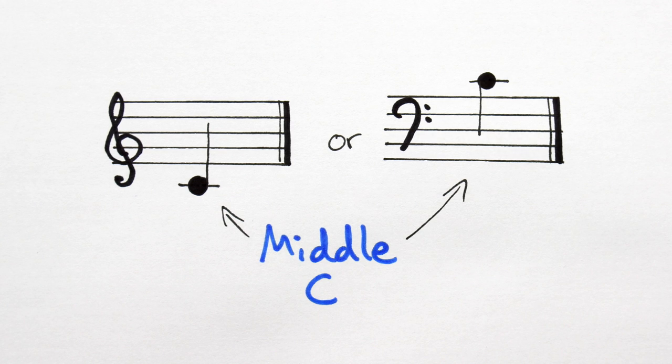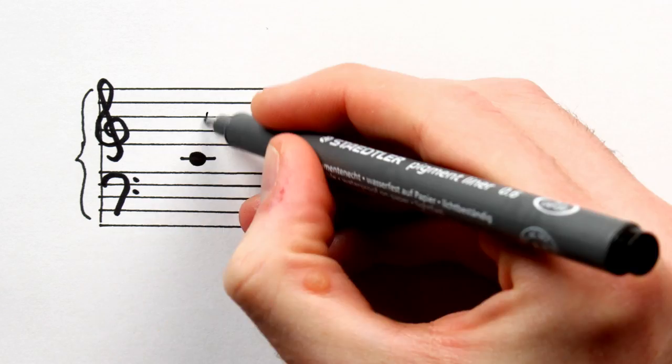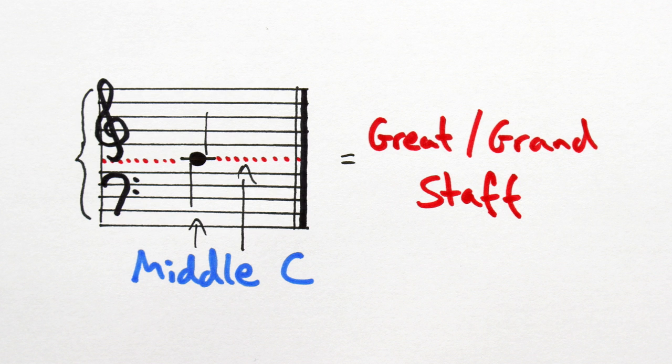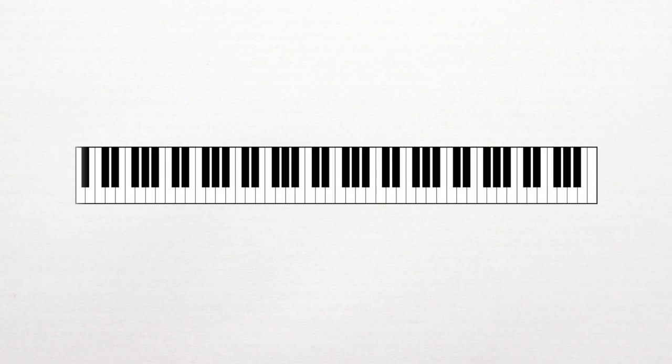And this should hopefully give you some insight as to why we call this note middle C. It sits in the middle of the great or grand staff. It's also kinda sorta in the middle of the piano's keyboard and sorta in the middle of the human singing range.